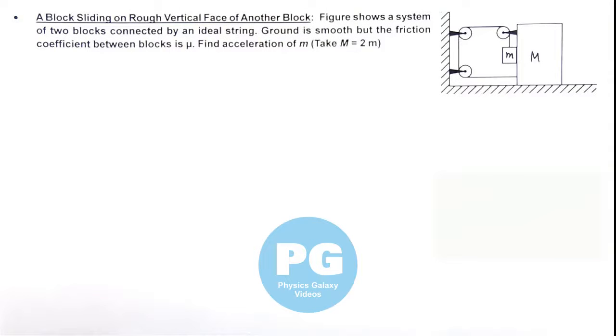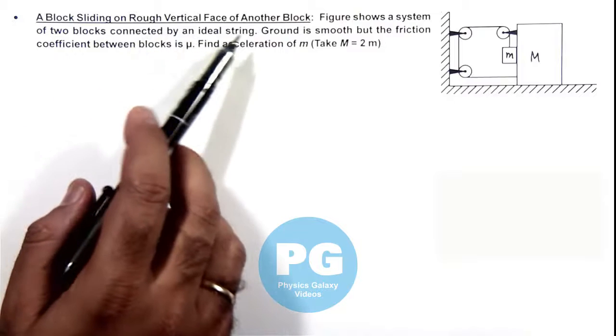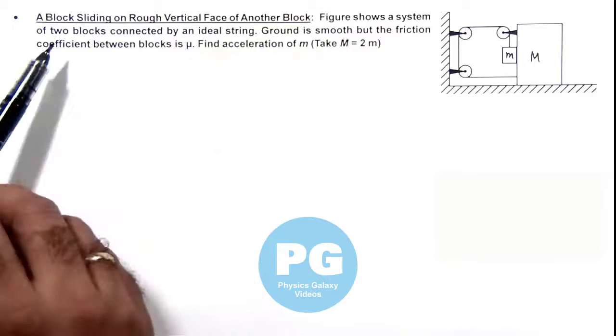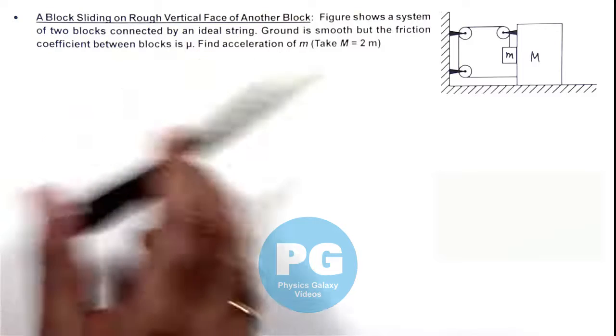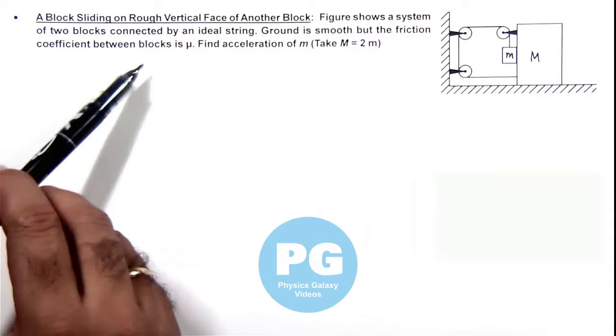In this illustration we'll discuss a block sliding on rough vertical surface of another block. The figure shows a system of two blocks connected by an ideal string. Ground is smooth but the friction coefficient between blocks is mu.